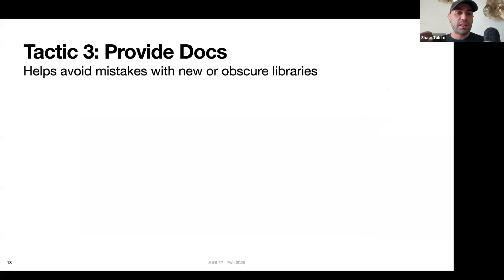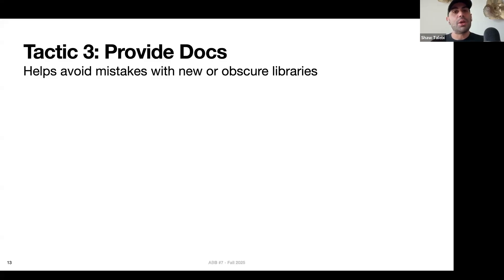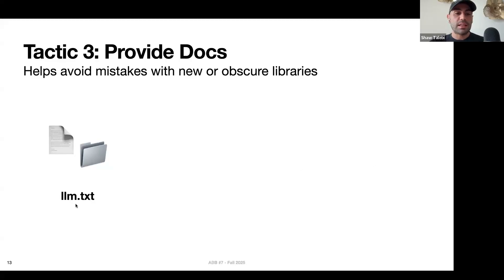The third tactic is to provide documentation. This helps the LLM avoid mistakes when using new or obscure libraries. For example, if the LLM's training cutoff was six months ago but you want to use the latest version of some UI library, give it the updated documentation — otherwise the LLM wouldn't know it. Or if you're working with an obscure hardware SDK with its own documentation, the LLM probably won't know anything about that, so giving it that SDK documentation is very advantageous. The simplest approach is to create text files — an llm.txt file or raw PDFs — and put them in a folder in your codebase so the coding agent can access them.